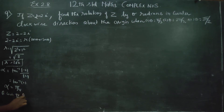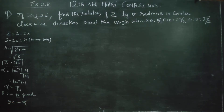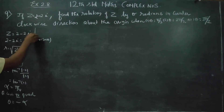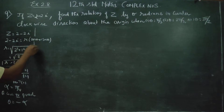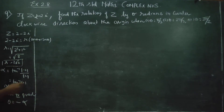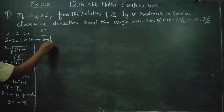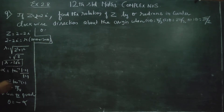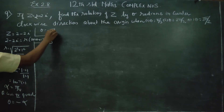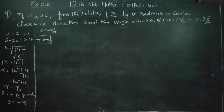Theta is in the fourth quadrant. Therefore, theta is equal to minus alpha. Therefore theta is equal to minus π/4.